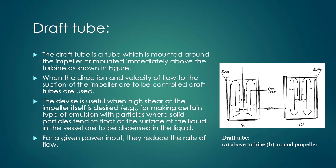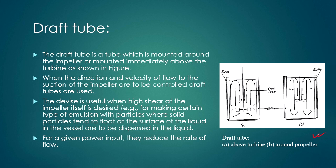A draft tube is mounted around the impeller or immediately above the turbine. It is used when the direction and velocity of flow to the impeller section need to be controlled, and is useful when high shear at the impeller itself is desired — for example, when making certain types of emulsions where solid particles tend to float at the surface and need to be dispersed into the liquid.